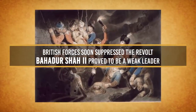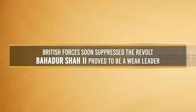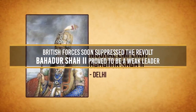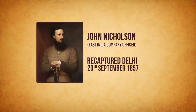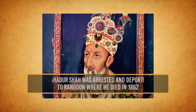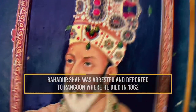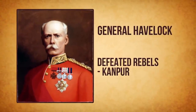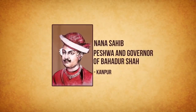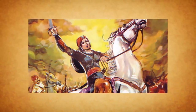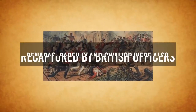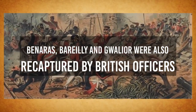However, the superior British force soon suppressed the revolt. Bahadur Shah proved to be a weak leader. Delhi was recaptured on 20th September 1857 by John Nicholson. Bahadur Shah was arrested and deported to Rangoon, where he died in 1862. The rebels were defeated by General Havelock in Kanpur. Nana Sahib, after being defeated, refused to surrender and escaped to Nepal. Hugh Rose suppressed the revolt and Rani Lakshmibai died on the battlefield. Banaras, Bareilly, and Gwalior were also recaptured by British officers.